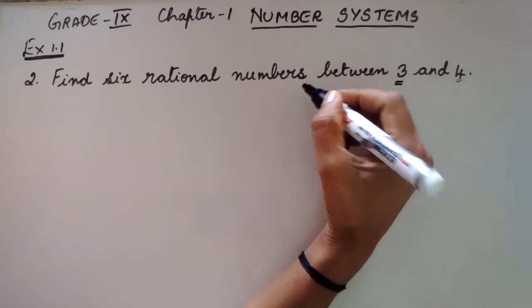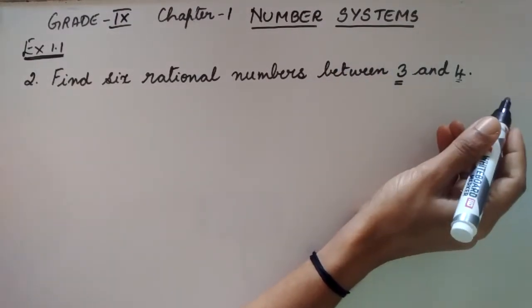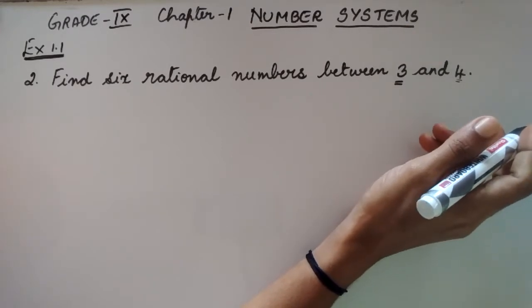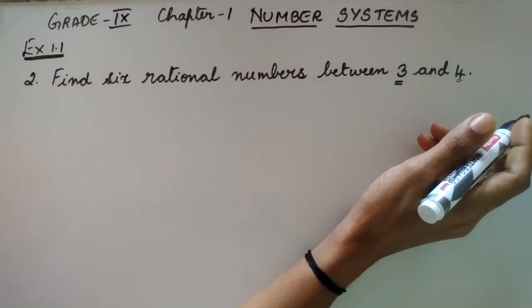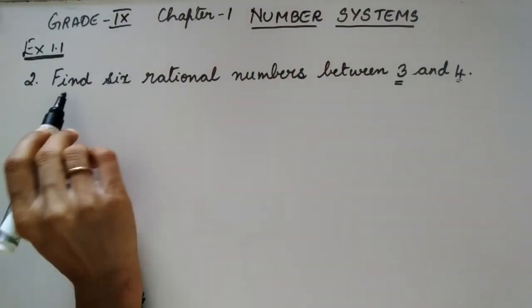Here, I have told to find 6 rational numbers between 3 and 4. For this, we need to choose one denominator. And to choose this denominator, first, look at this problem.